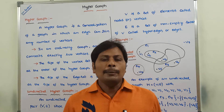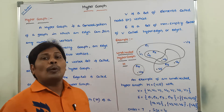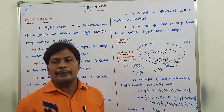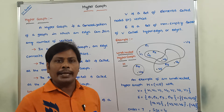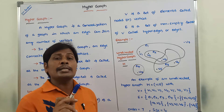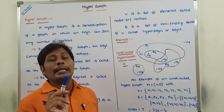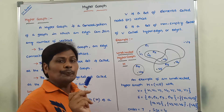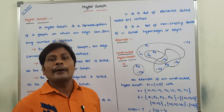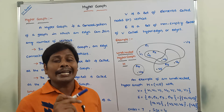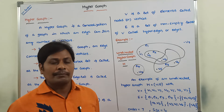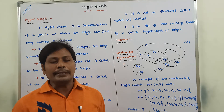First, what is the difference between an ordinary graph and a hypergraph? In the case of an ordinary graph, any edge connects or joins exactly two vertices. But in the case of a hypergraph, an edge can connect or join any number of vertices. That is the basic definition of a hypergraph.